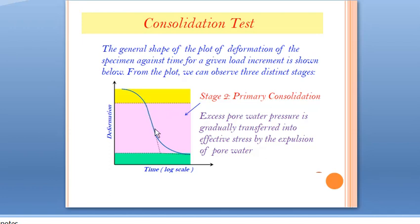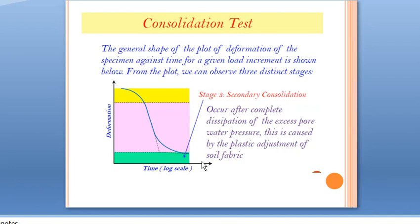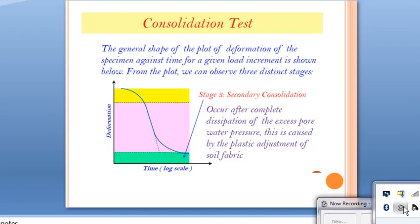The time taken to complete primary consolidation is very high compared to the other two stages. In this stage, excess pore water pressure is gradually transferred into effective stress by expulsion of pore water. The last stage is secondary consolidation, which occurs after complete dissipation of excess pore water and is caused by plastic readjustment of soil fabrics. You should read the procedures and initial setup in the textbook, and also study the relationship Δh/h₀ = Δe/(1 + e₀).